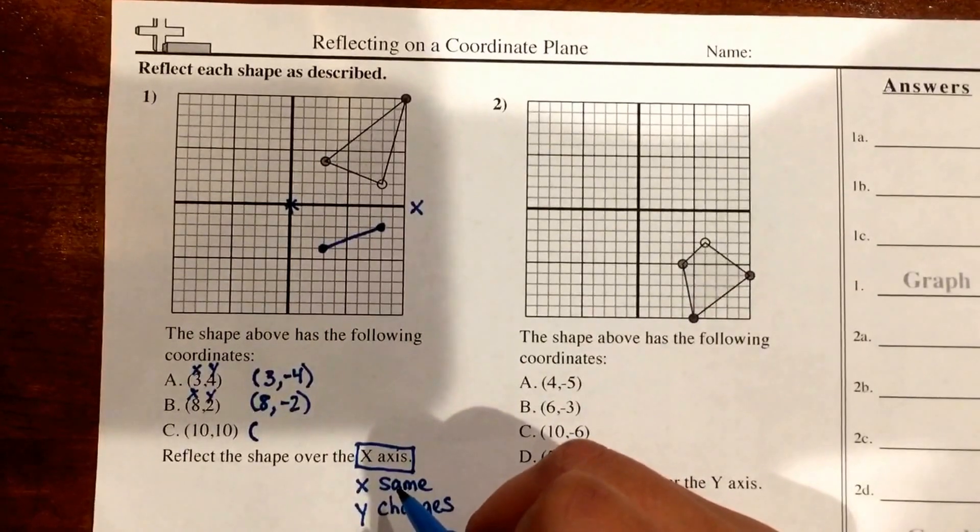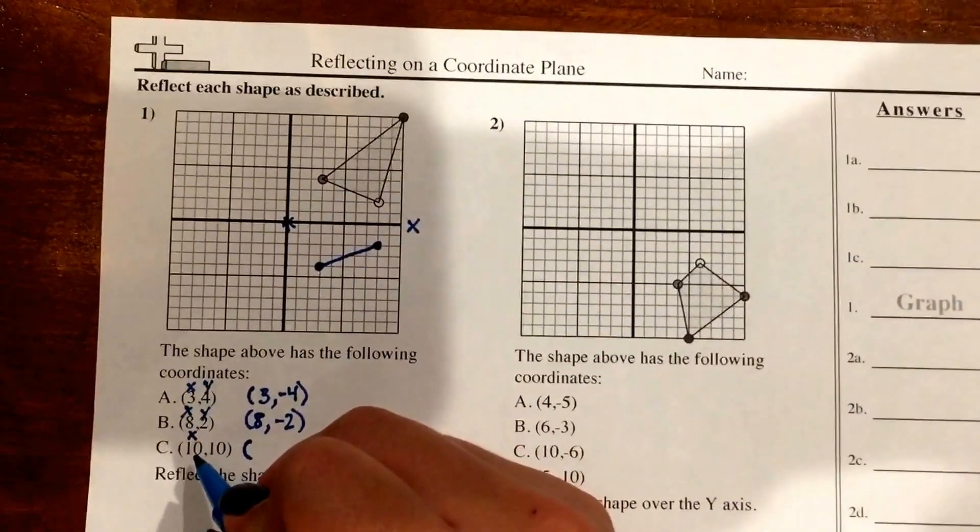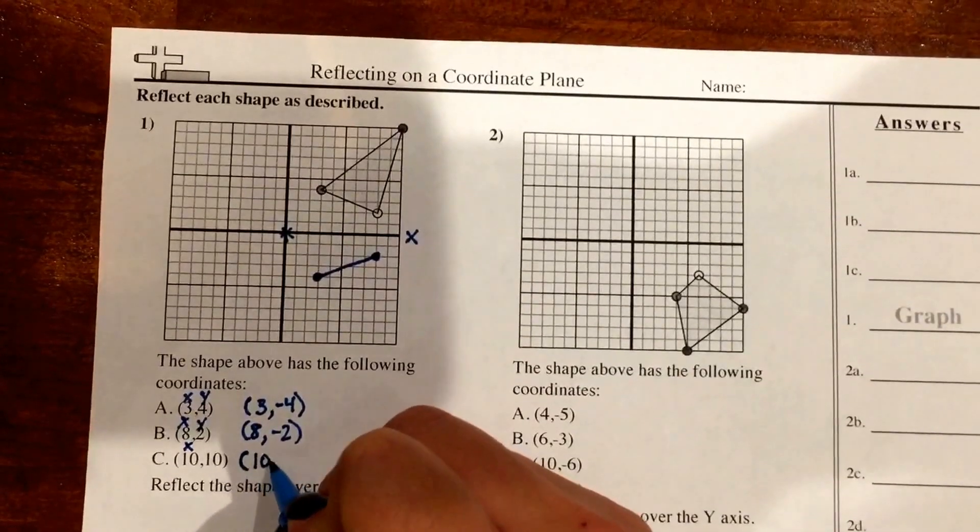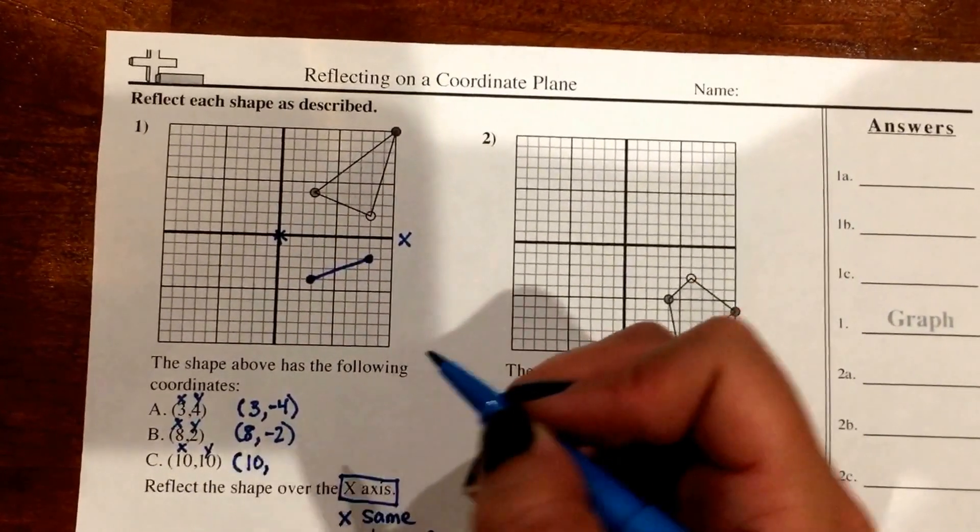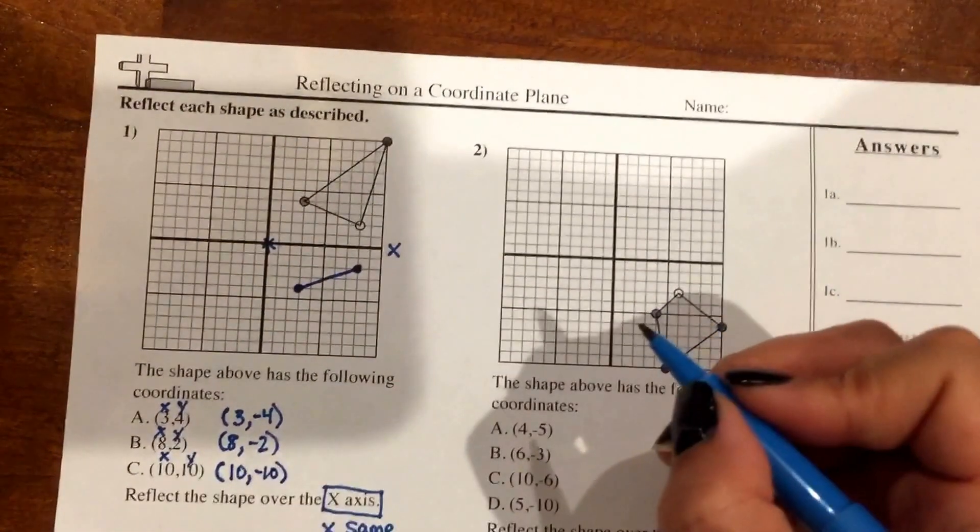So my x-coordinate stays the same. I know my x is a positive 10, so I'm going to keep it as 10. And my y-coordinate is also a positive 10, but it changes to a negative 10, which is its opposite.